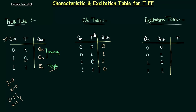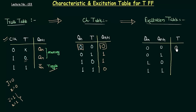Now we can move to the excitation table. The excitation table can be calculated only if you have the characteristic table — the truth table gives us the characteristic table, and the characteristic table gives us the excitation table. So let's find out T from the characteristic table. When Qn is 0 and Qn plus 1 is 0, T is 0. When Qn is 0 and Qn plus 1 is 1, T is 1. When Qn is 1 and Qn plus 1 is 0, T is 1. And when both Qn and Qn plus 1 are 1, T is 0.